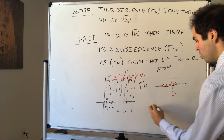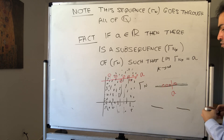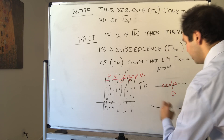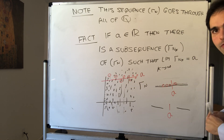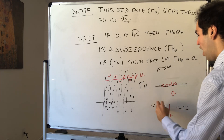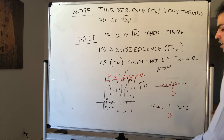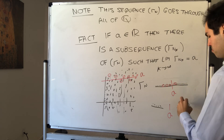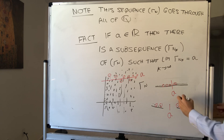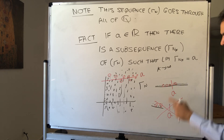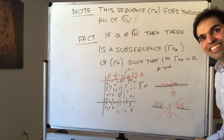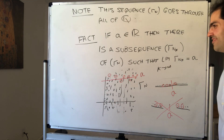If the rational numbers were not dense, it would mean there is some real number you cannot approximate with rational numbers, and for that real number there would be no subsequence converging to it. But luckily this doesn't happen — and again, this is not the main point of this video.